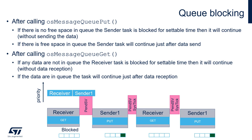Let's have a closer look at the queue blocking mechanism in combination with CMSIS-OS version 2 API. After a sender calls OSMessageQueuePut to send data to the queue, it can do the following operations. If there is no free space in the queue, the sender task is blocked for a settable time, specified within one of the arguments of the OSMessageQueuePut function. After this time elapses, it will continue execution with the next instruction, but without sending data to the queue because there was no free space.